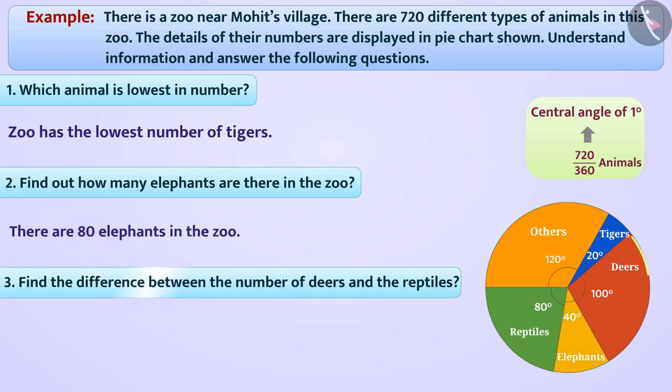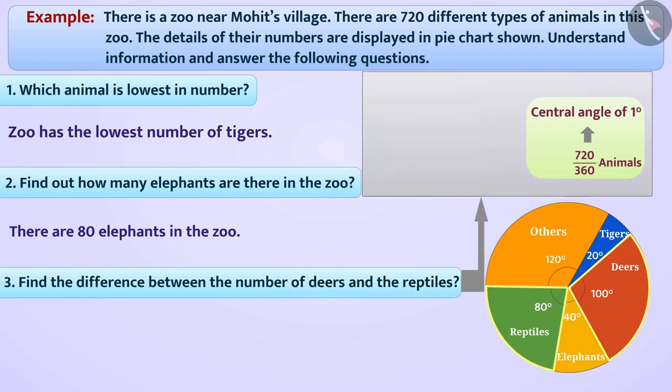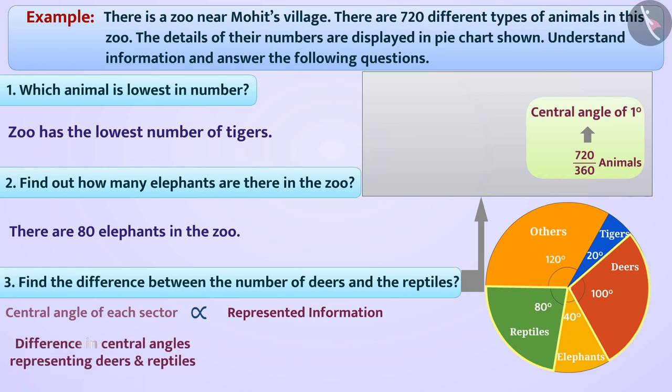Find the difference between the number of deers and the reptiles. We know that the central angle of each sector in a pie chart is proportional to the information it represents. In this way, the difference in central angles representing deers and reptiles will be proportional to the difference in the number of deers and reptiles.